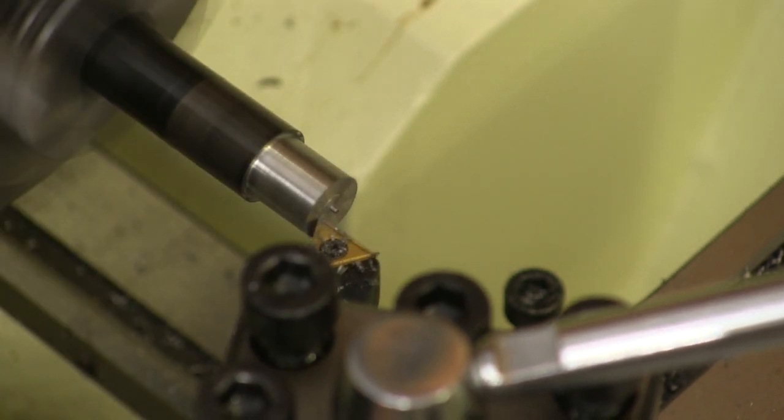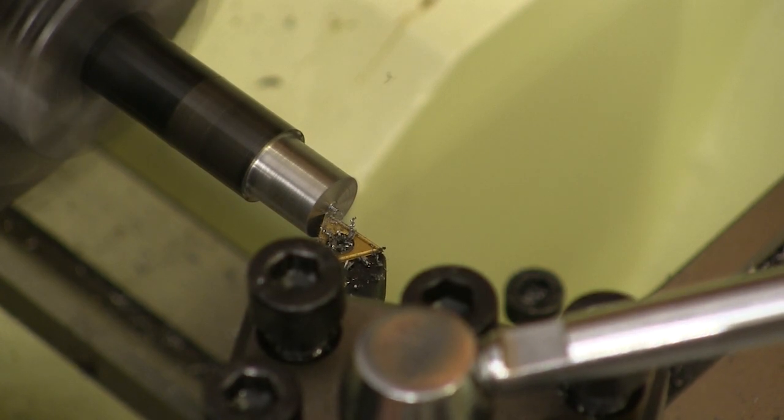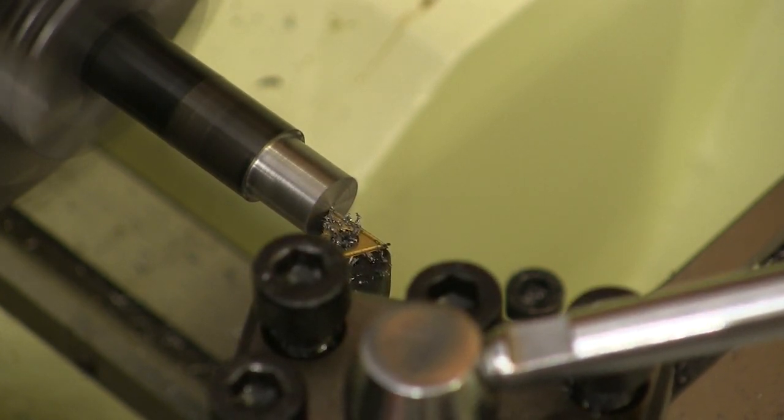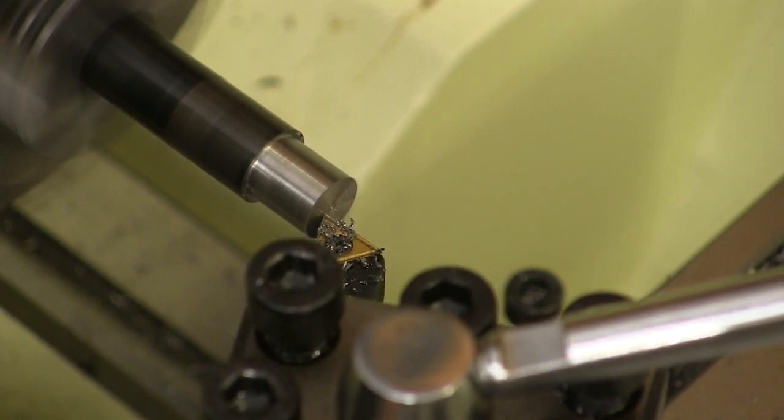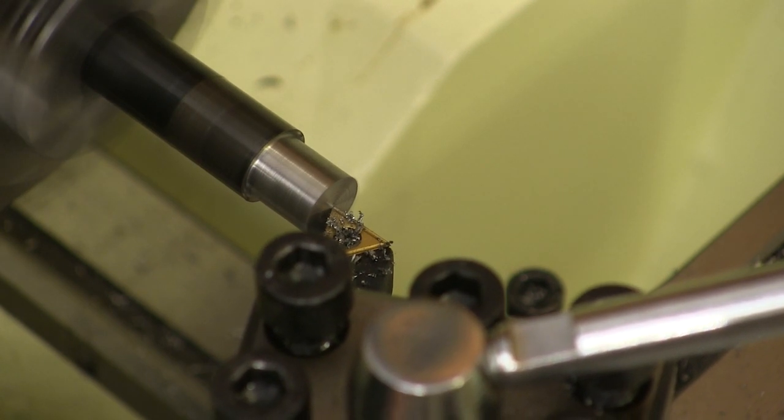I added a ten thousandths of an inch thick shim to the stack and made this cut, and it turned out that was perfect. When I took the tool fully to center, the nub disappeared and had a nice clean flat surface.